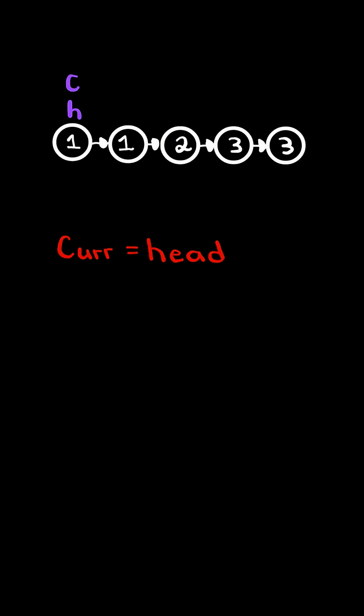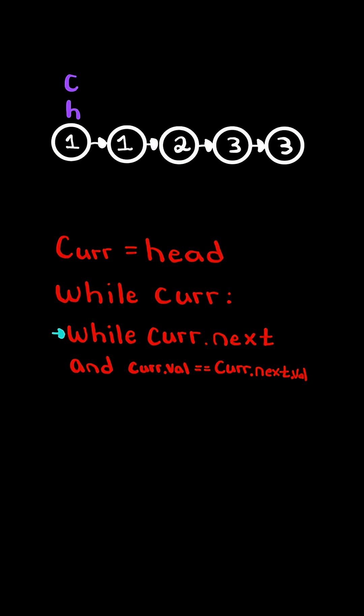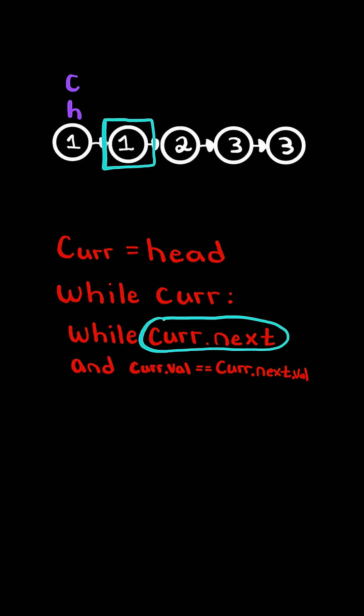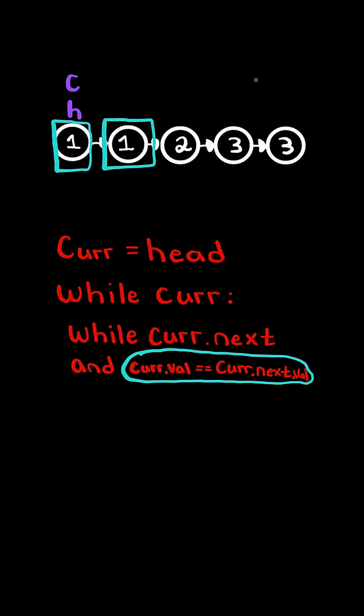First, we will create a new pointer current and set it to head. While the current pointer is not null, we have a second inner loop checking that current.next is not null, and checking if the current value equals current.next value.